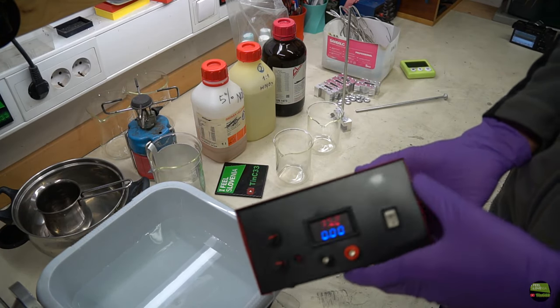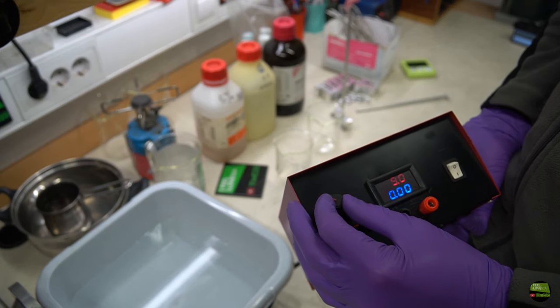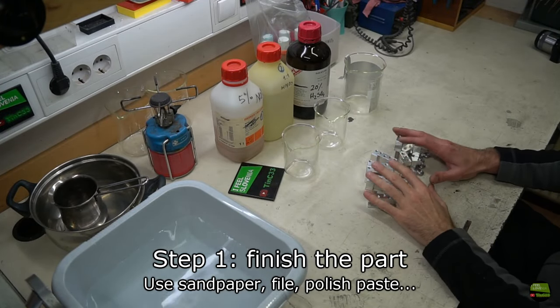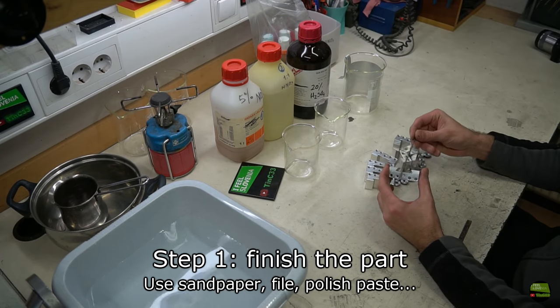For anodizing we'll also need a power supply with settable voltage and current, and some wires to connect the parts. I have everything prepared for anodizing. Now it's the last option to finish the aluminum parts. We can sand it with sandpaper, polish or whatever.